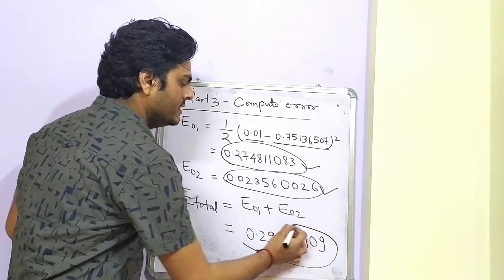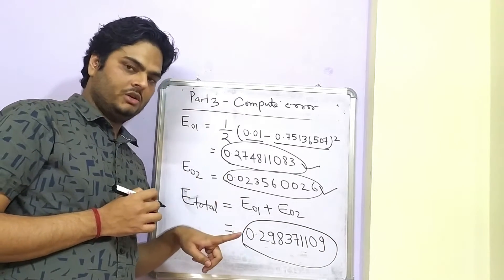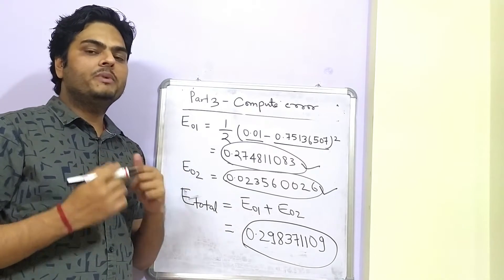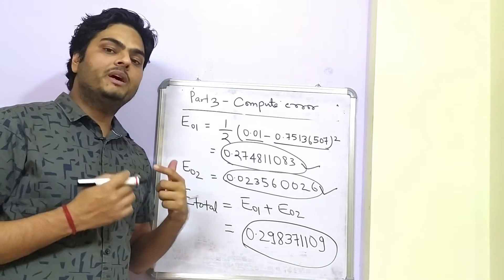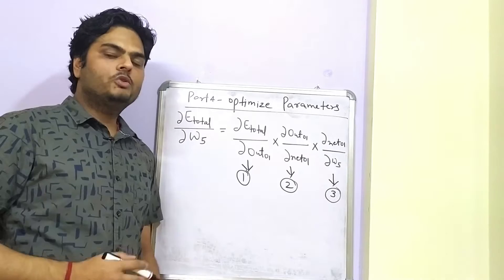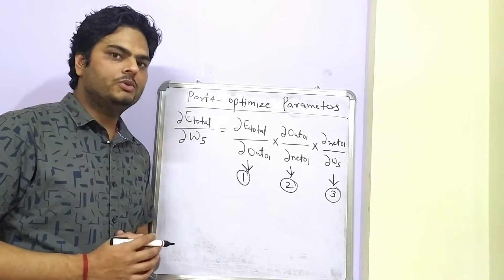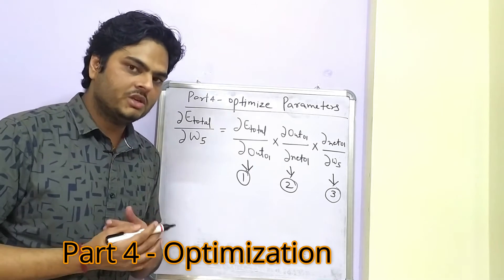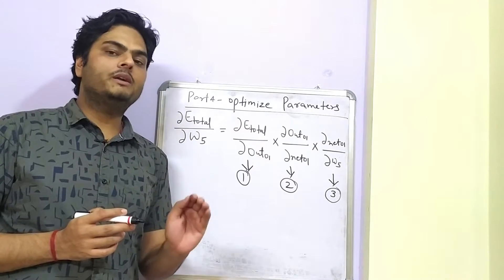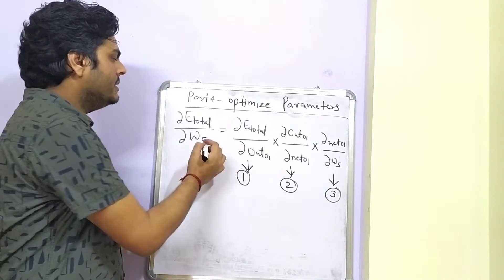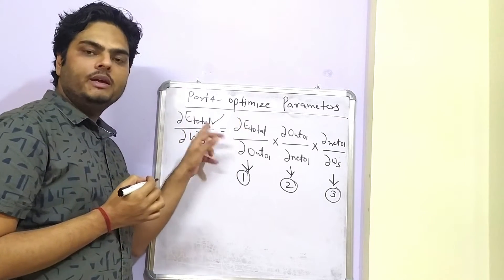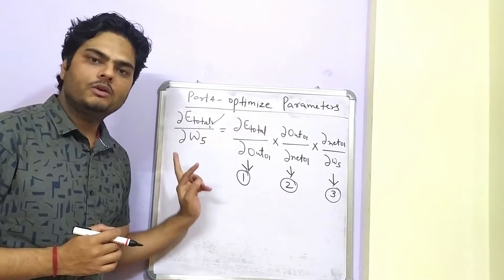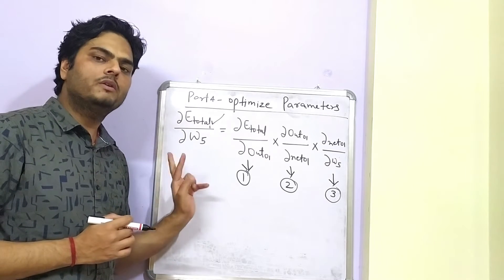Our job — or the model's job — is to minimize this total error by optimizing the initial assumptions of the weights and biases. If we want to minimize E_total in terms of W5, we need to find the gradient of total error with respect to W5. This is how gradient descent works.